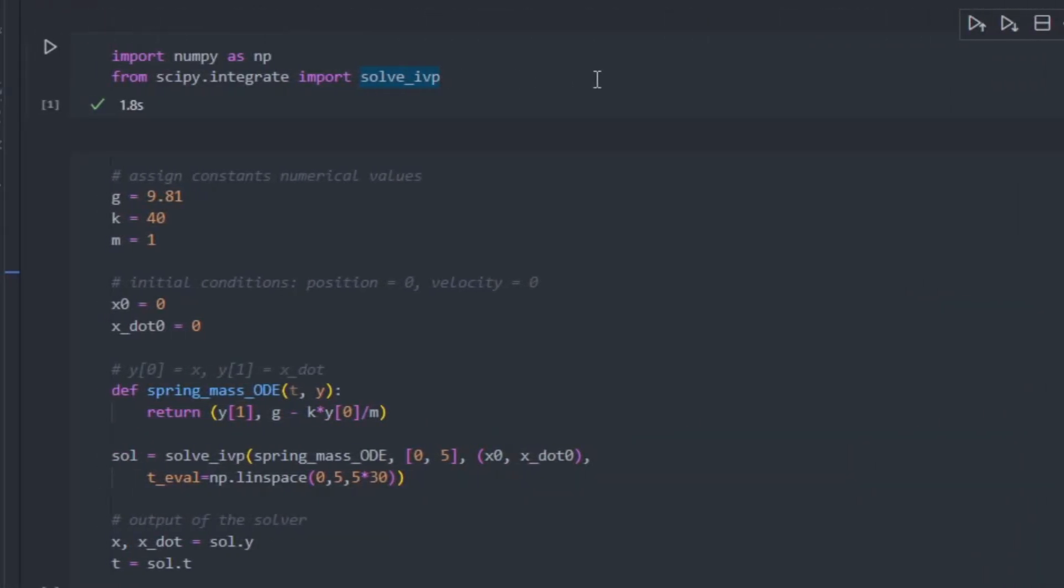Now let's simulate a spring and mass system with numpy and scipy. For step one, we'll define our constants g, k, m and the initial conditions x naught and x dot naught. x naught is the initial position of the mass, and x dot naught is the initial velocity. For step two, we'll write down the system ODE. In scipy, y is the state vector, so y0 is x and y1 is x dot. We return x dot comma x double dot.